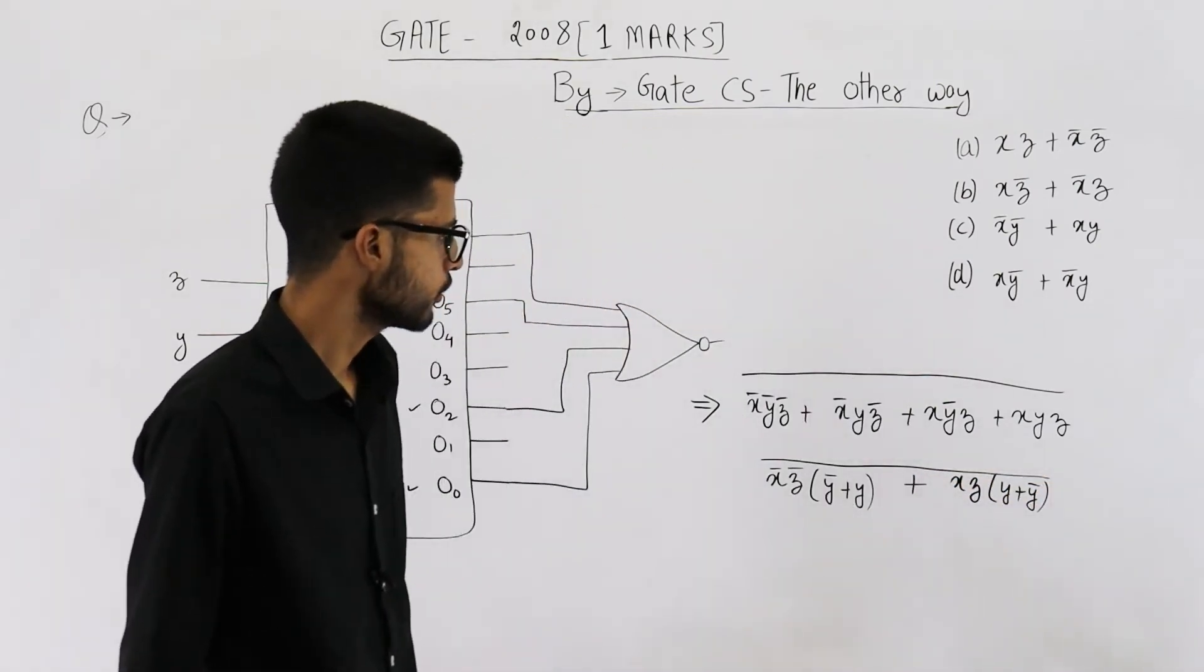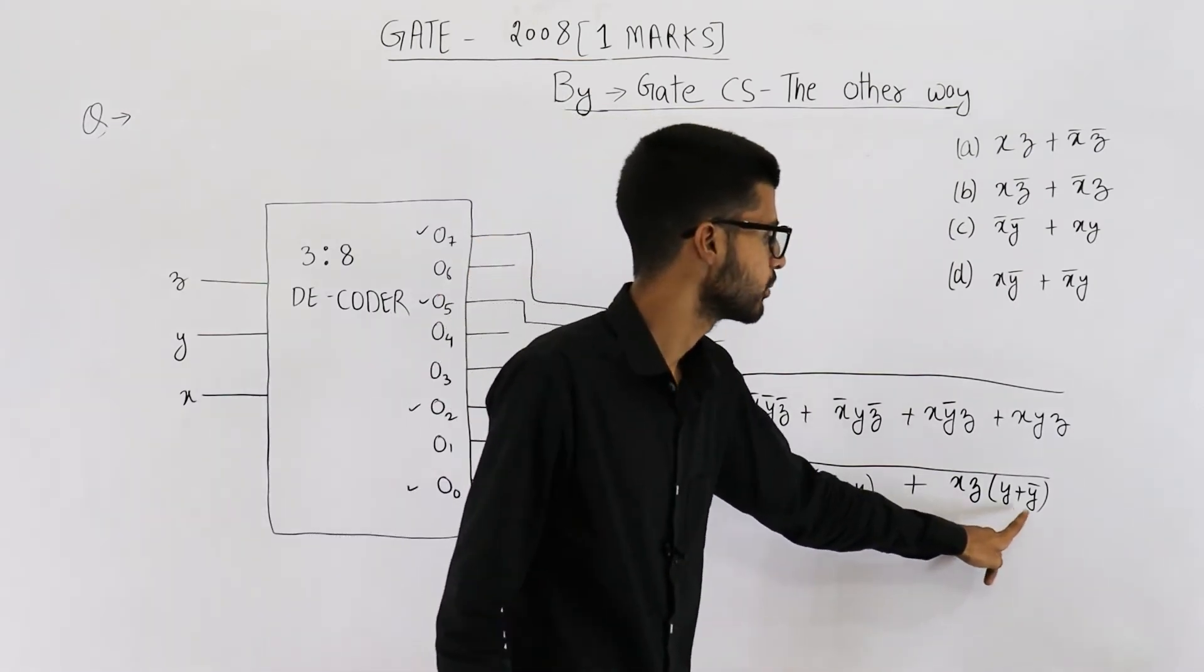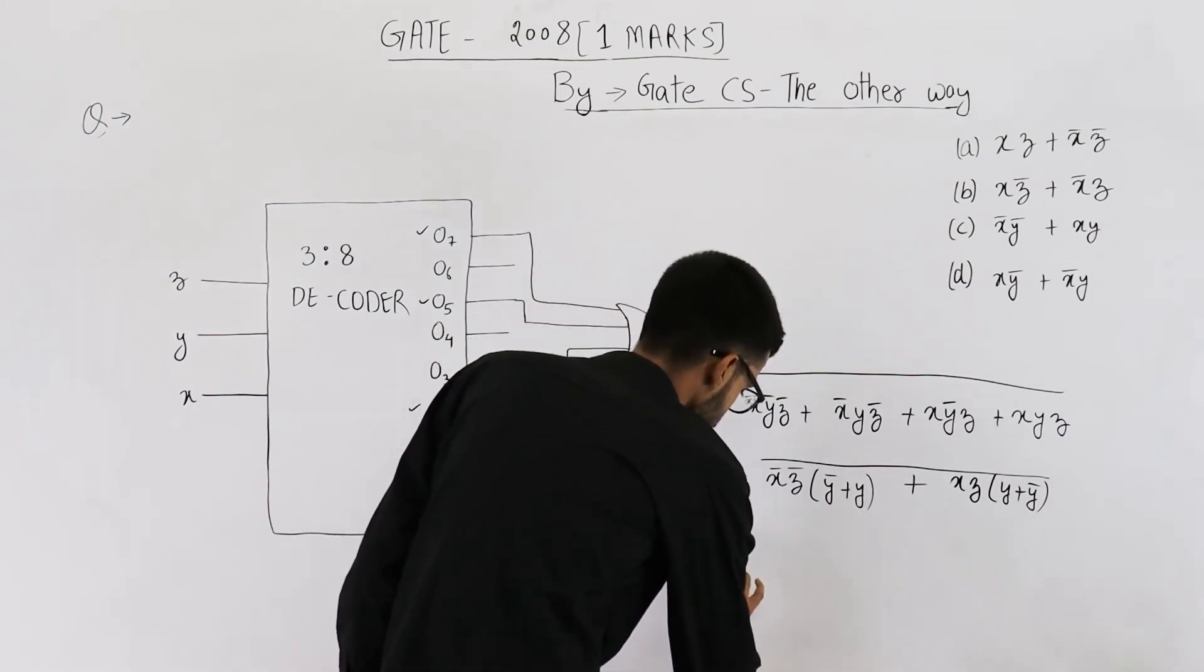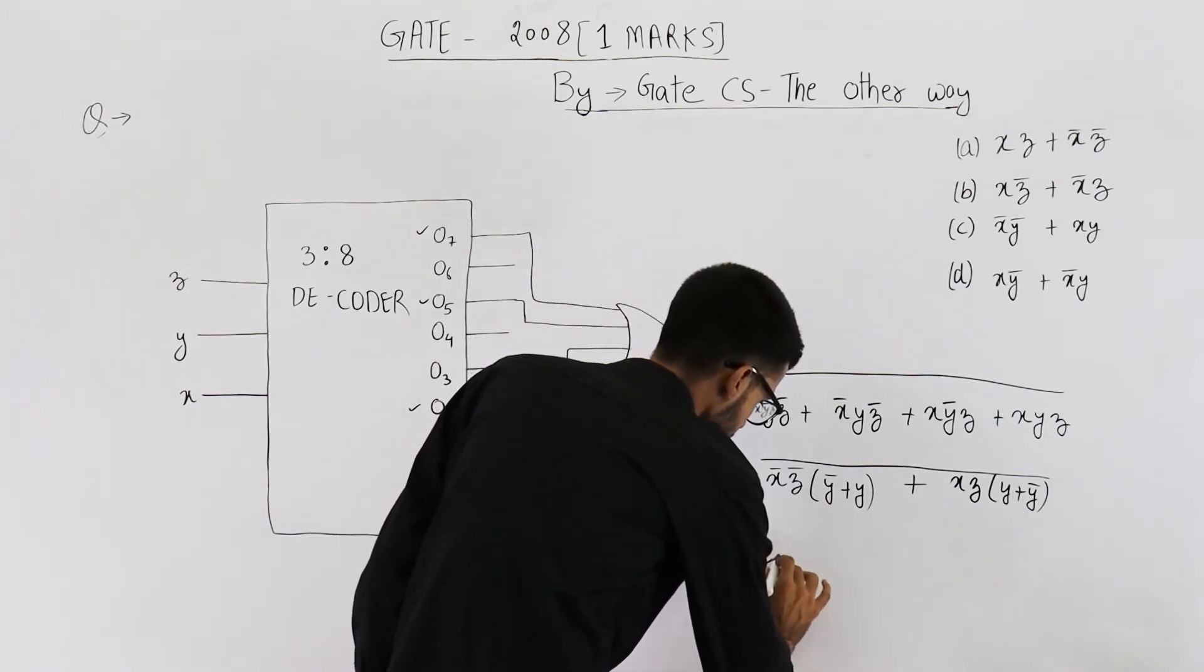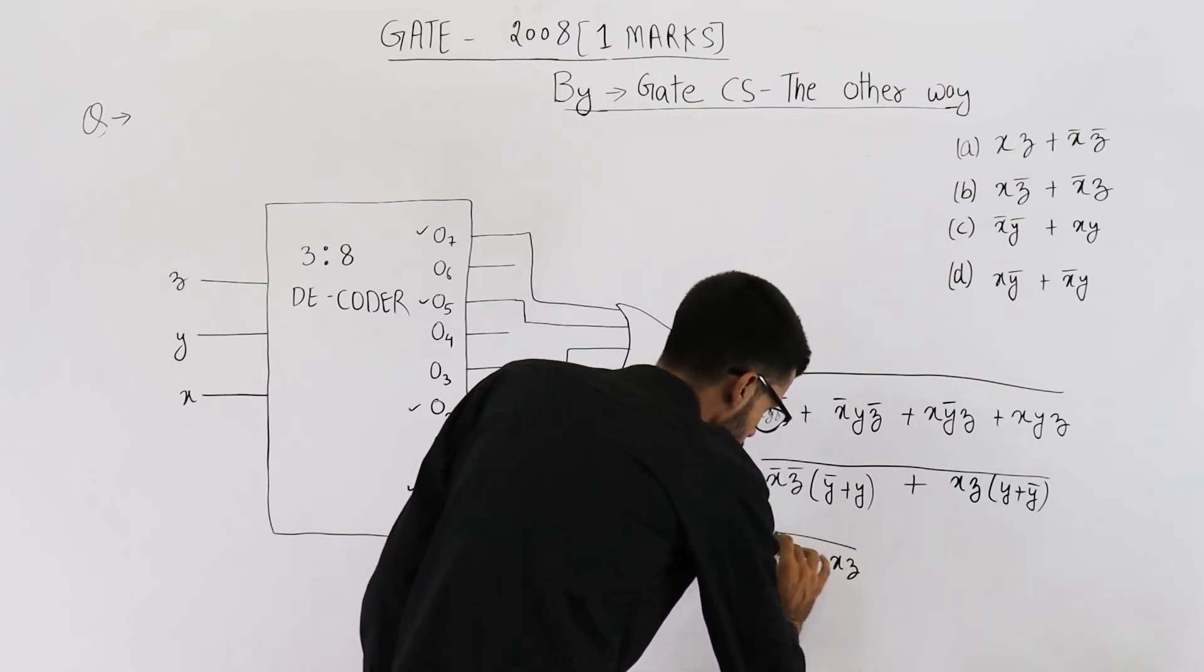Now you see y plus y complement will be one, and y plus y complement will be again one. So you are left with x bar z bar plus x z whole complement.